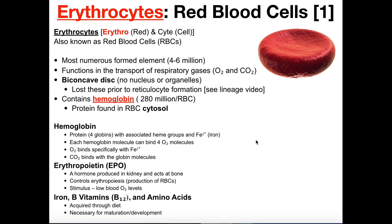In this video we're going to be discussing the first of the formed elements in the blood, and these are red blood cells. Red blood cell is the common name for what we typically refer to as erythrocyte. Breaking down the name: 'cyto' means cell, and 'erythro' means red, so erythrocyte literally translates to red cell. We can also abbreviate these as RBCs — in a clinical context you may hear RBCs a lot more — but they all refer to the same thing.